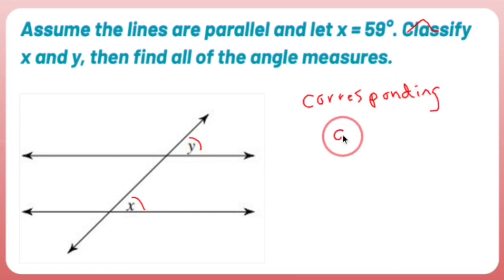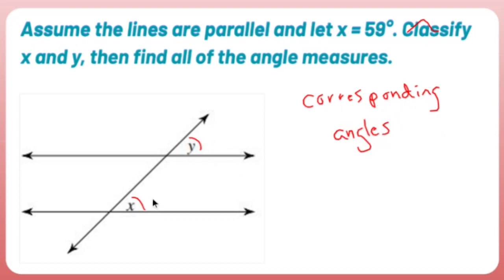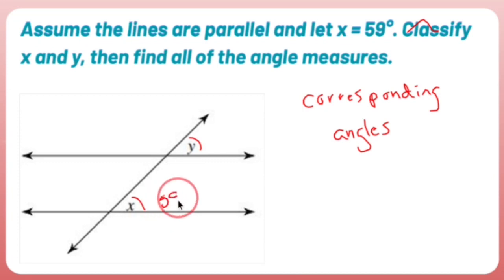Corresponding angles are angles where if I were to take this, rip it off, and put it down here, it's literally the exact same angle. Now by saying they're the exact same angle, since x is 59 degrees, that means y is also 59 degrees.